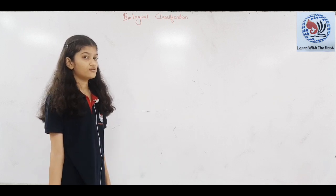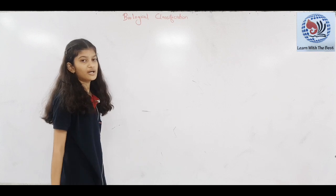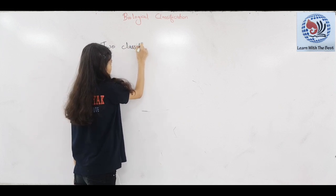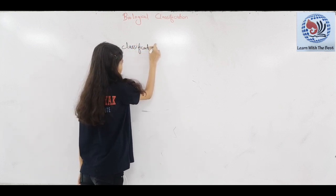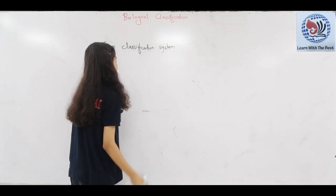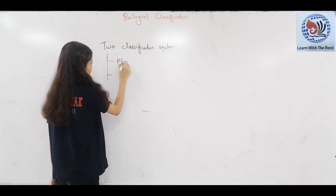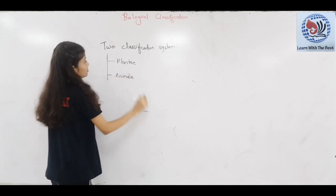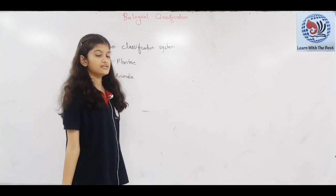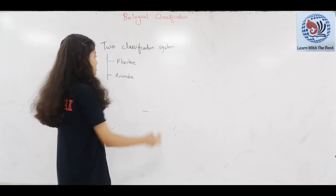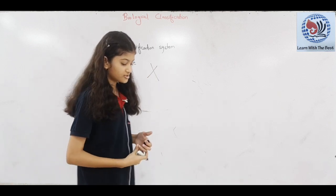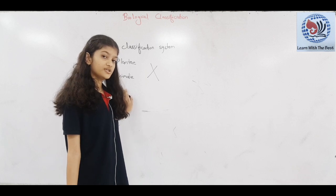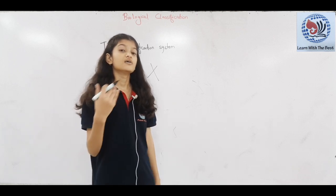First we will study about the two classification system, which was given by Carolus Linnaeus. The two classification system included Plantae and Animalia. But this classification system is not acceptable because it is not clear and does not cover some organisms — it is not covered in some cases.